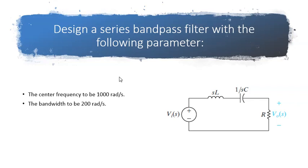Here is the problem that we're going to solve. We're going to design a series bandpass filter with the following parameters. The center frequency, we want it to be 1000 radian per second and we want the bandwidth to be 200 radian per second. If you remember from the lecture, these are the two main parameters that if we do have from a filter we can define it.